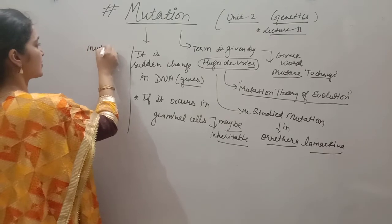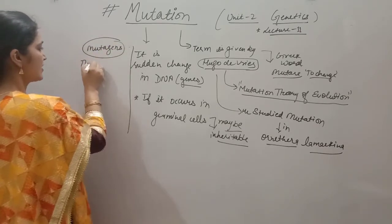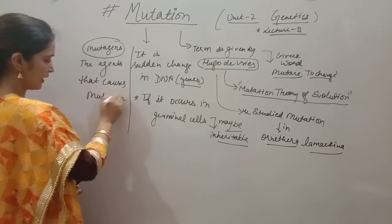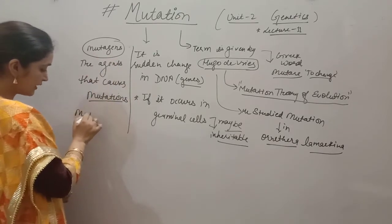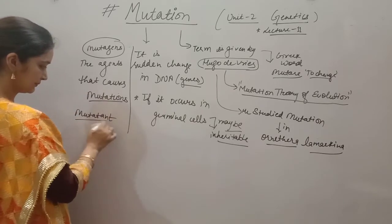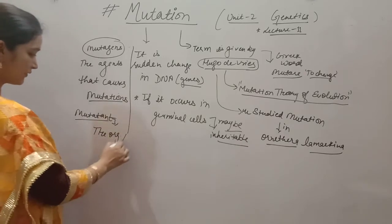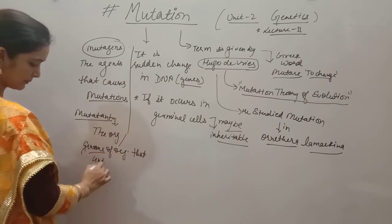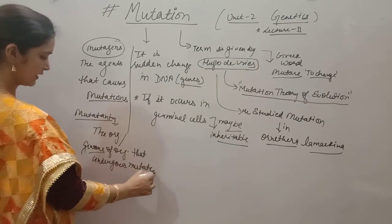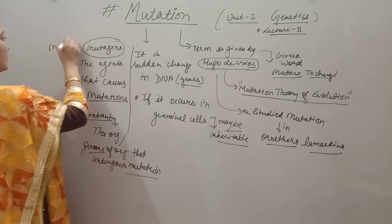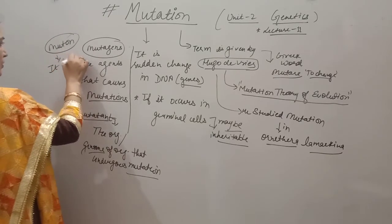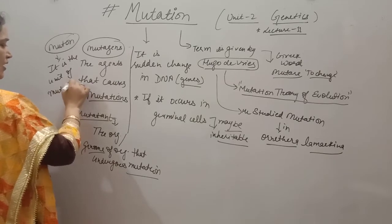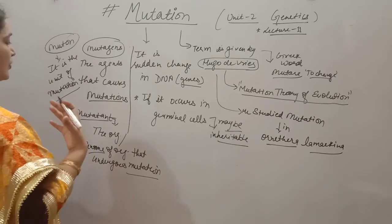The agents that cause mutations are called mutagens. A mutant is the organism whose genome undergoes mutation. Muton is the unit of mutation — meaning the DNA or the region that is undergoing change, that is called a muton.